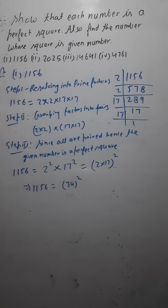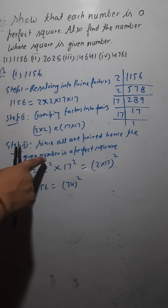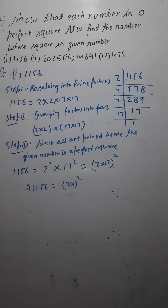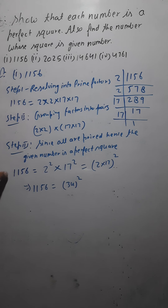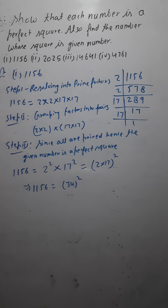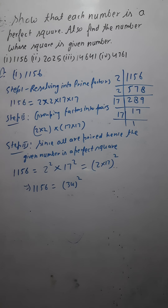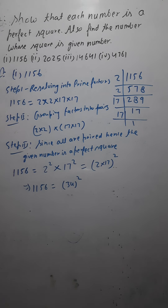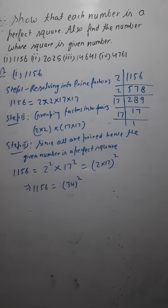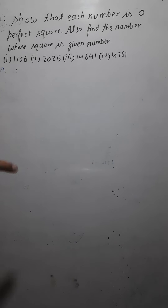This is how you would solve all the questions. Similarly, solve the second question: first resolve into prime factors, then group into pairs, then state that since all are paired the given number is a perfect square, and finally find which number it is the square of. You have to do the remaining questions on your own. Remember, you have to divide only by prime numbers when doing prime factorization.